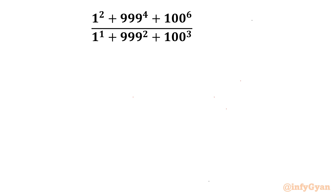Welcome to Infigyan friends. In this video we are going to take up one interesting and challenging Math Olympiad expression. It is 1^4 + 999^4 + 100^6 over 1^2 + 999^2 + 100^3. I will simplify this expression in three different ways.